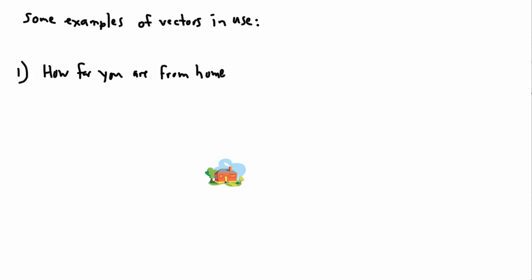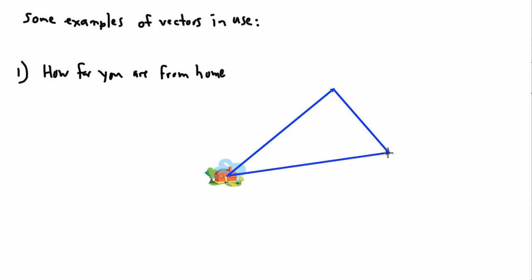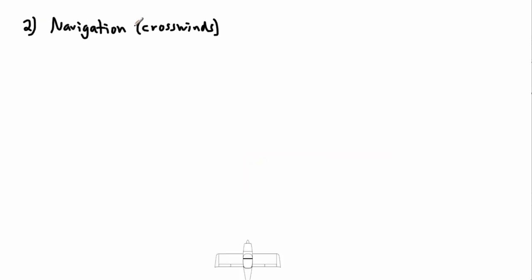Let's say you start from home and go for a walk — you walk this way, and then you walk that way. How far you've walked is easy: just add up each distance. But how far are you from home? If you add up the two arrows, you can figure out your straight-line distance back to the start. That's called displacement, often represented with the letter s.